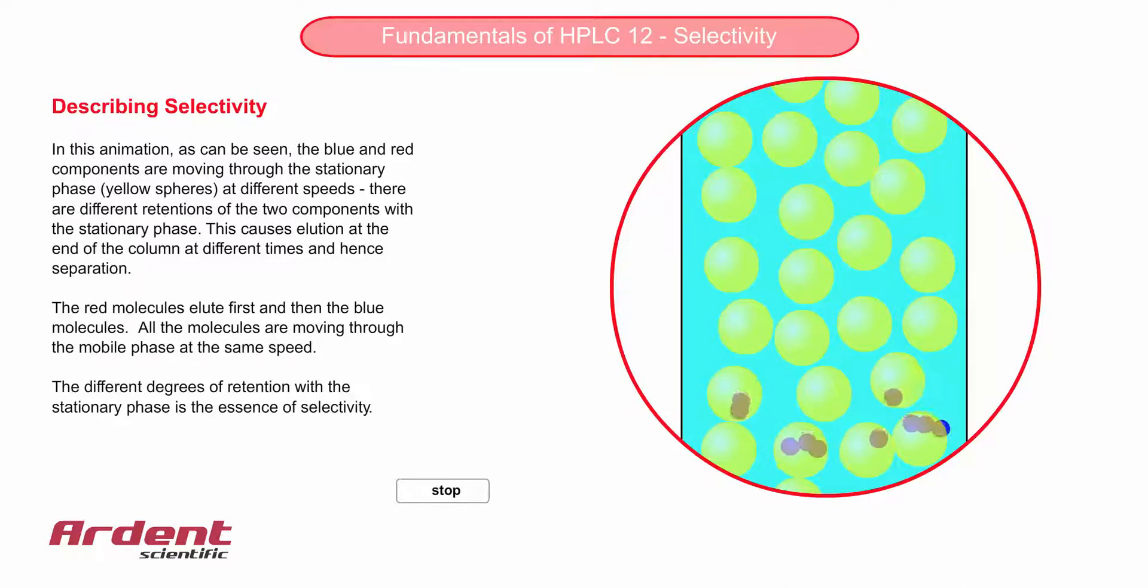You'll notice the red molecules moving faster through the column, and of course the red component will come out before the blue component. The reason for this is the red component is less retained by the stationary phase yellow spheres.